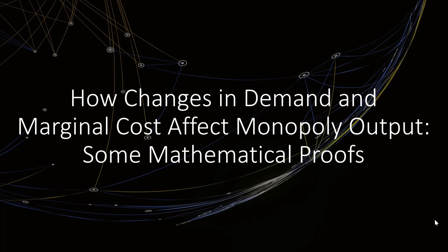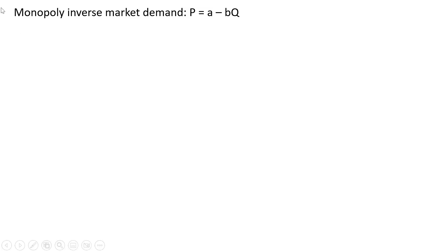We're going to look at how changes in demand and marginal cost affect monopoly output, doing some mathematical proofs. Here's the monopoly's inverse market demand in general format, and here is the monopoly's marginal cost.